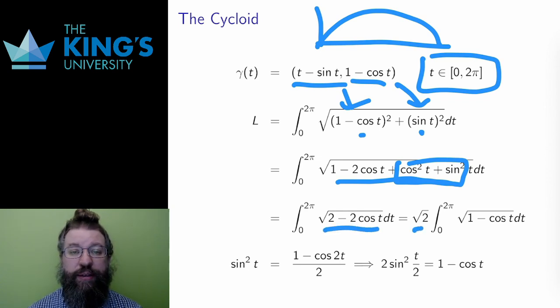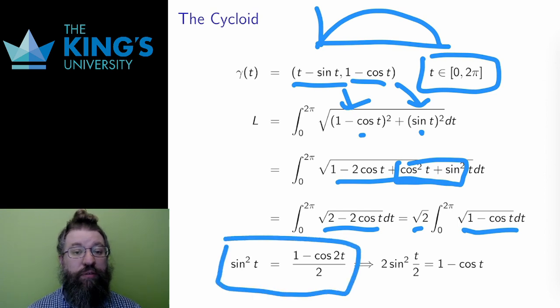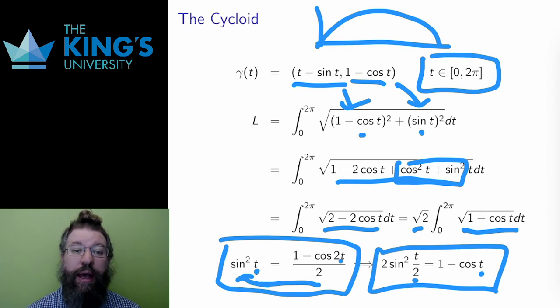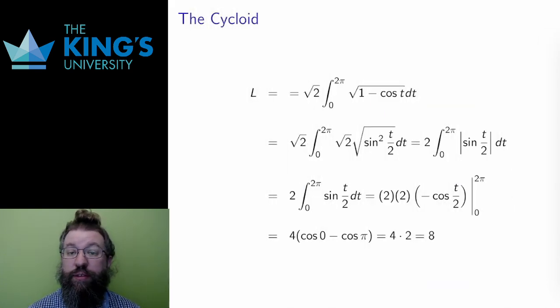I can use a clever trig identity here. This is the half angle identity. By dividing the angle by 2 in both places, and then multiplying by 2, I can then replace 1 minus cos t with 2 sine squared t over 2. After using this identity, I get this integral. The square and the square root cancel, leaving absolute value.